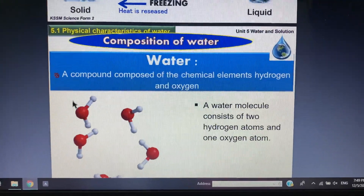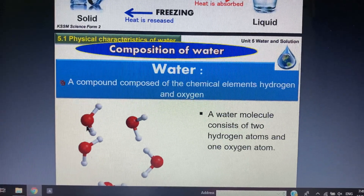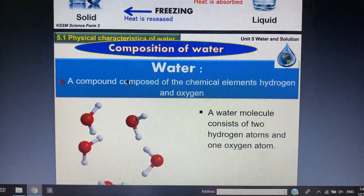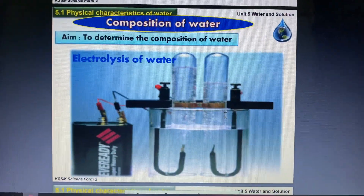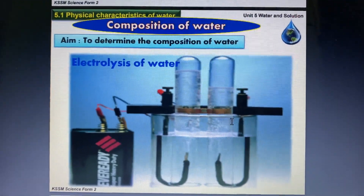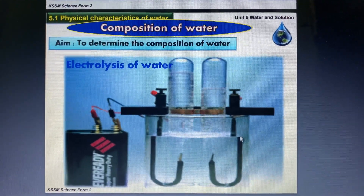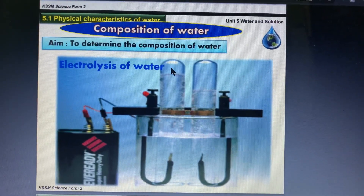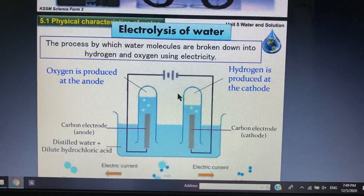Every water molecule is made of one oxygen atom and two hydrogen atoms. So water is a compound. To break down water molecules, we use a chemical process called electrolysis. Electrolysis requires electrical energy and a current supply. We have two terminals — the cathode and the anode — and we can split water into hydrogen and oxygen.